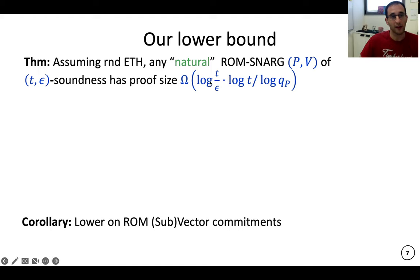And I'll already say that as a corollary, you get a lower bound on sub-vector commitments with the similar natural flavor. So if you had a sub-vector commitment in the random oracle model, you would put it inside Micali and get a SNARG that contradicts this theorem.